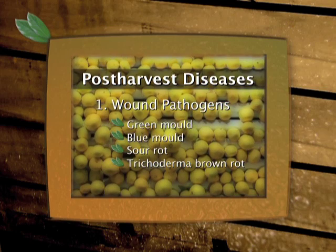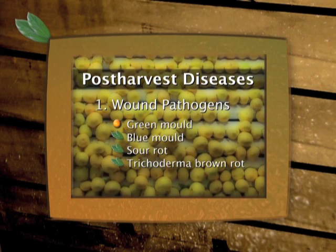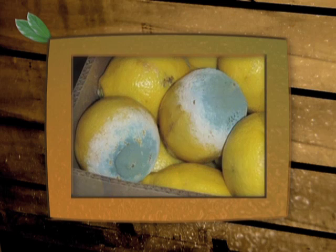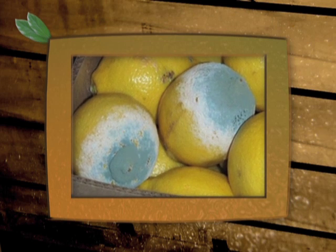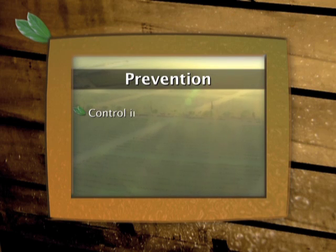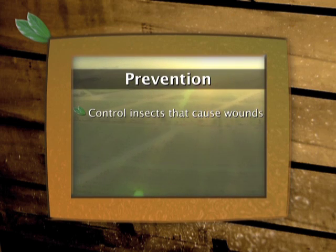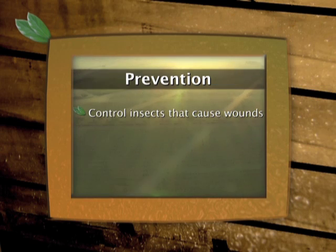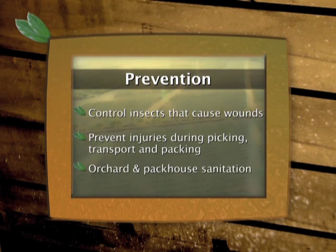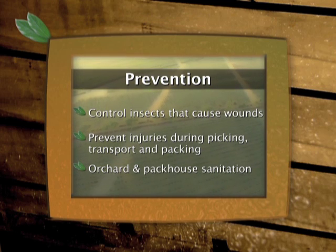Green mould infection takes place through wounds caused by insects and injuries to the fruit that occur during picking, transport and packing. To prevent green mould, we therefore need to make sure that insects that cause wounds, such as fruit fly and false coddling moth, are properly controlled and that fruit is handled carefully during picking, transport and packing. Sanitation of the orchard and packhouse furthermore helps to keep the spore load down.